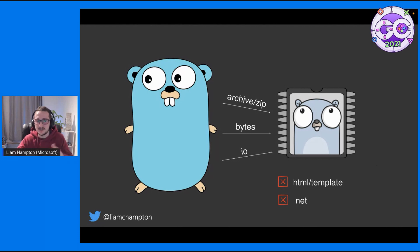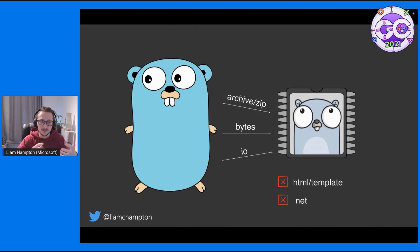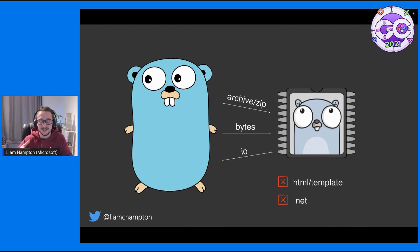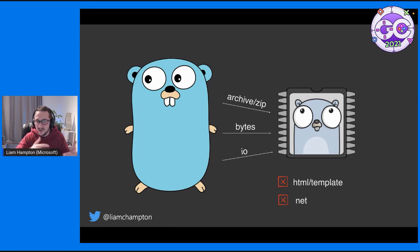Hopefully my slide can illustrate this quite well. It essentially cherry-picks a number of really useful libraries from the main language — which you have to have installed prior — such as IO, bytes, and archive zip. And then it disregards things which are not necessarily seen as important, like HTML templates or the net package. This is purely because some of the 32-bit boards you'll be using it on probably won't need those.